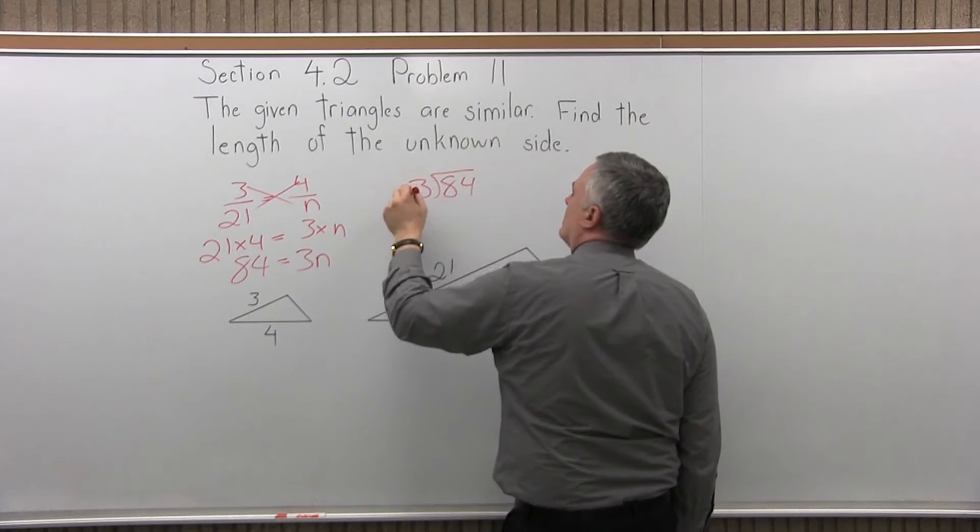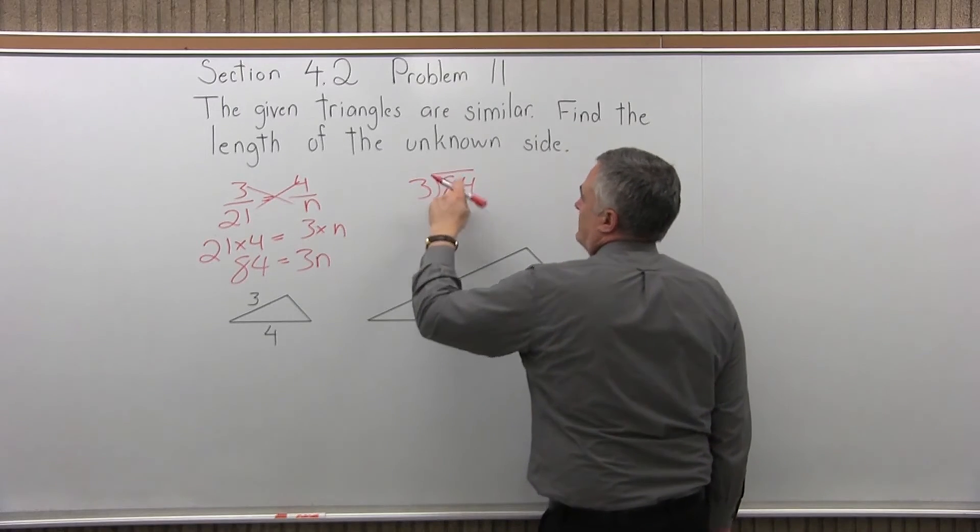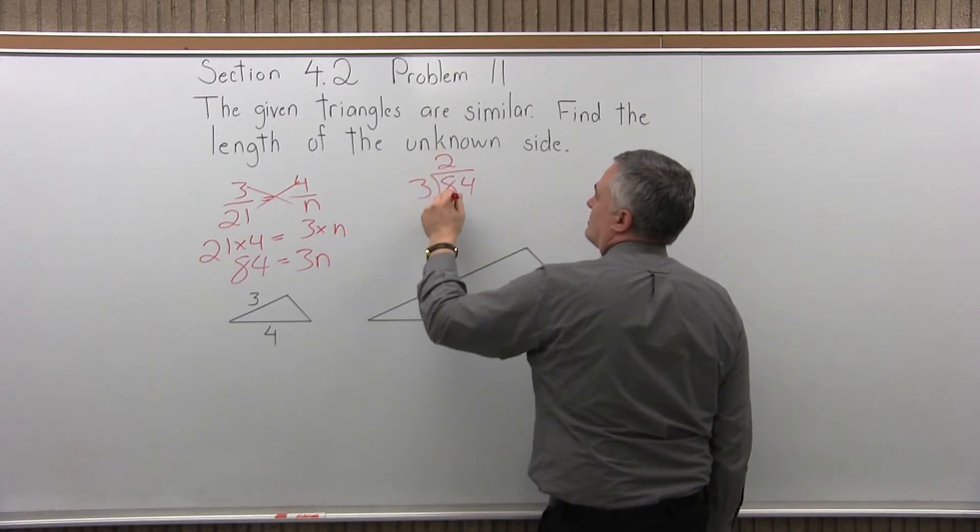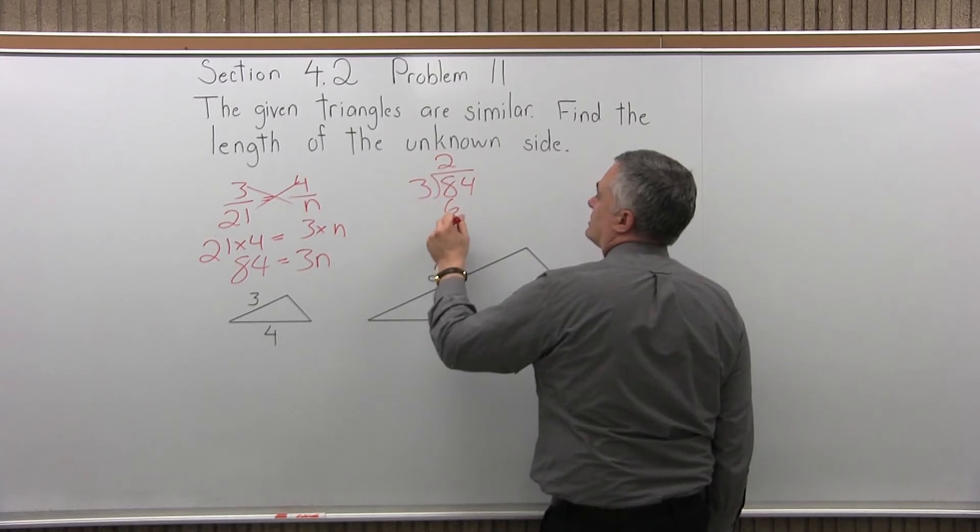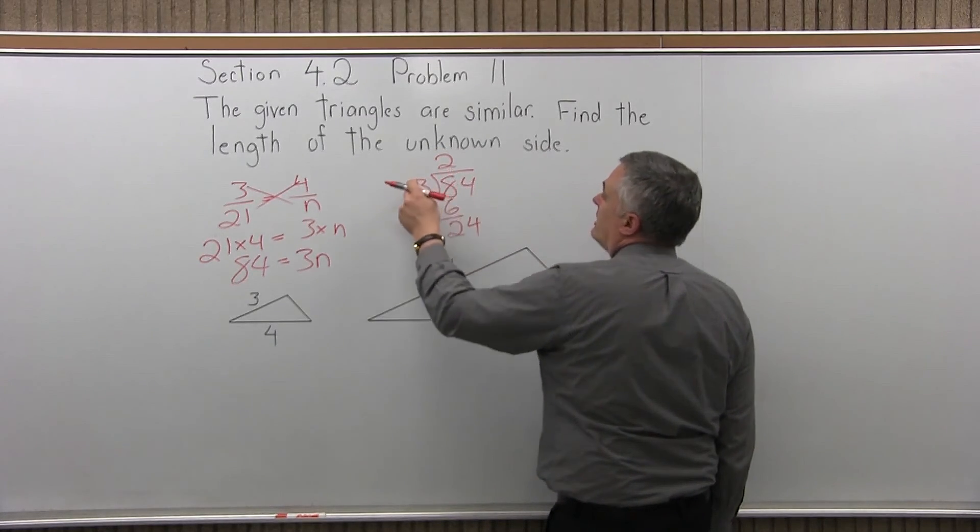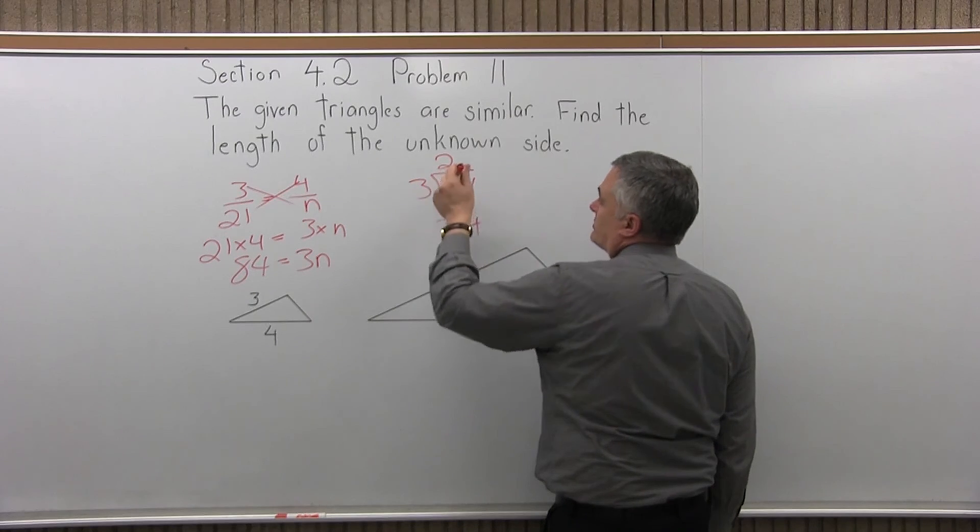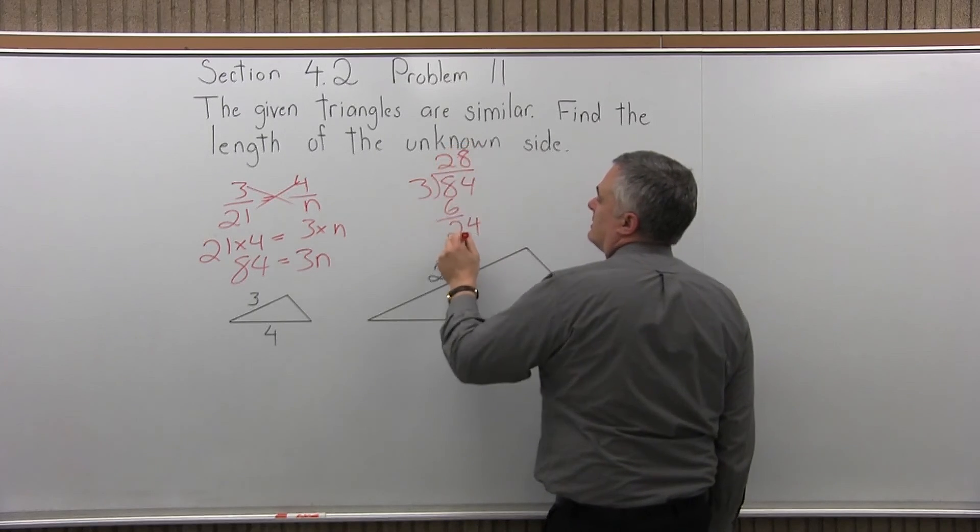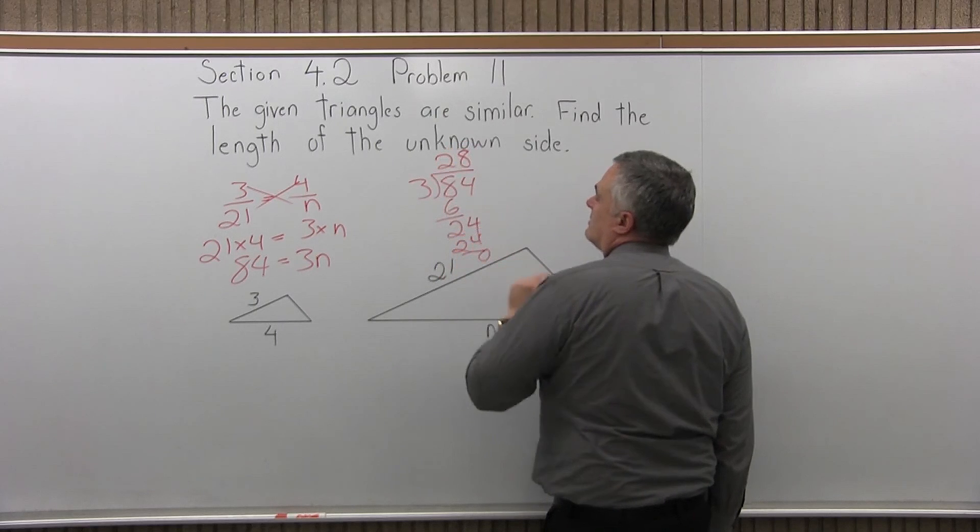84 divided by 3. 3 divides into 8 twice. 2 times 3 is 6. 8 minus 6 is 2. Bring down the next digit, which is a 4, 24. It goes in evenly. 3 times what is 24? 3 times 8. And you have a remainder of 0.